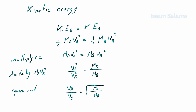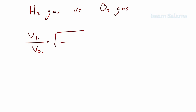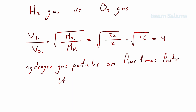For example, to compare the rate of diffusion of hydrogen gas to oxygen gas: V_H₂ / V_O₂ = square root of (molar mass of O₂ / molar mass of H₂). The molar mass of O₂ is 32 and of H₂ is 2, so V_H₂ / V_O₂ = 4. This means hydrogen gas diffuses 4 times faster than oxygen gas.